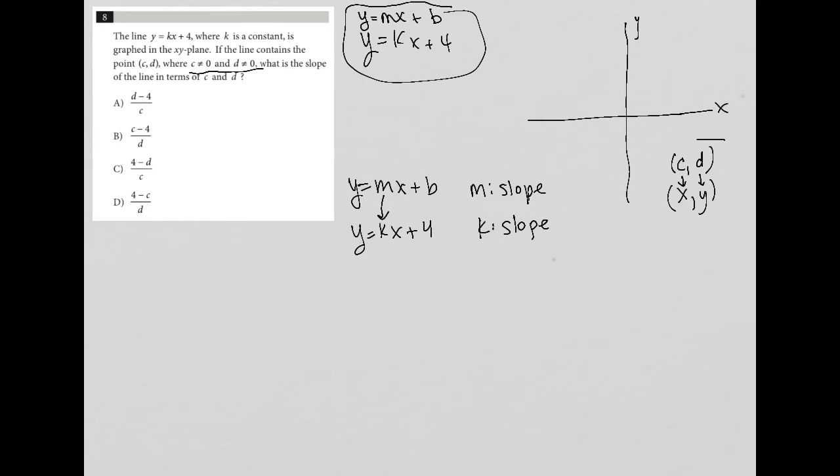Now, how do I connect this c comma d into my y equals kx plus 4? Well, because I know that c is an x value and I know that d is a y value, I could rewrite this equation.